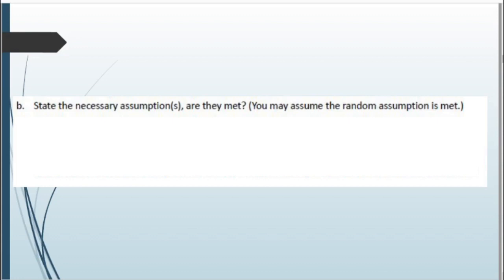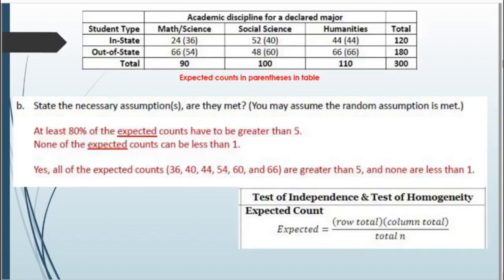Next, we state the necessary assumptions and check if they are met. We can already assume the random assumption is met. For chi-squared, we need at least 80% of expected counts to be greater than 5, and none of the expected counts can be less than 1. The expected counts were given in parentheses: 36, 40, 44, 54, 60, and 66. All are greater than 5 and none are less than 1, so each assumption is met.